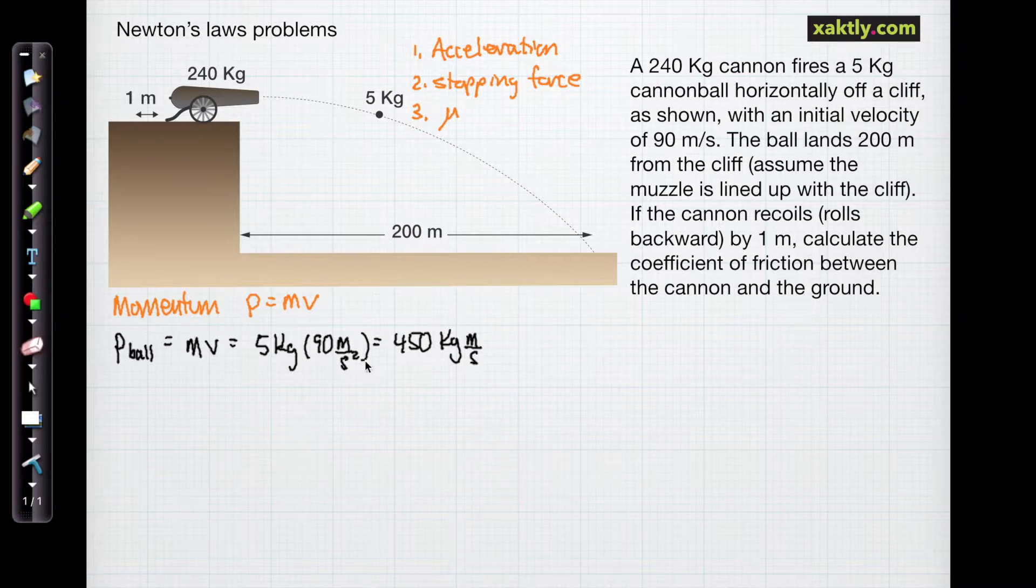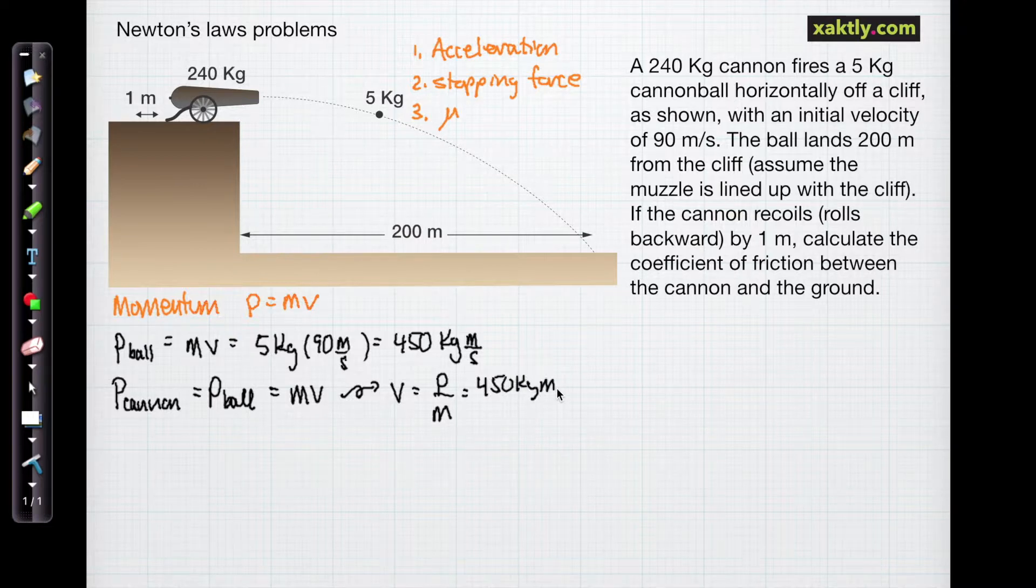Now conservation of momentum says that the momentum of the cannon must be the same as the momentum of the cannonball, just in the opposite direction. So we know the cannon's momentum, and we know its mass, so we should be able to find its velocity. Velocity is going to be momentum over mass, which is 450 kilogram meters per second, divided by the mass of the cannon, 240 kilograms. So the initial velocity of the cannon is 1.875 meters per second.